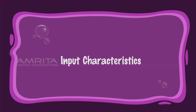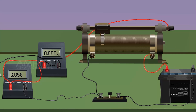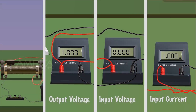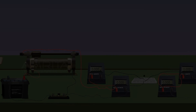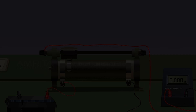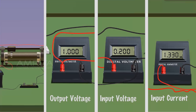Input Characteristics: Connect the keys K1 and K2 using a connecting wire and insert the keys. The collector voltage VCE is kept constant by adjusting the rheostat RH2. Note the base voltage VBE from the voltmeter V1 and base current IB from the microammeter. Record the values in a tabular column. By keeping the collector voltage constant, the base voltage VBE is varied from zero by adjusting the rheostat RH1.